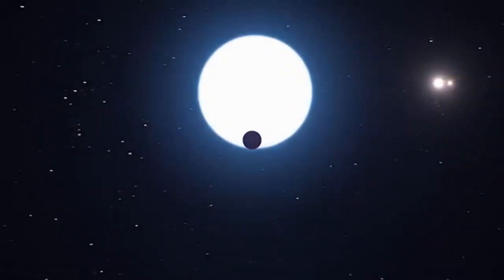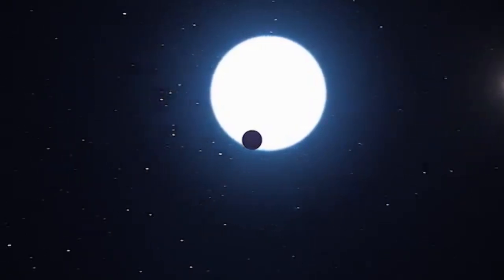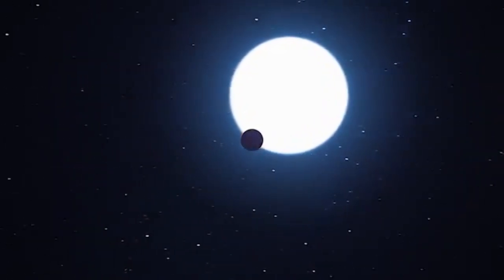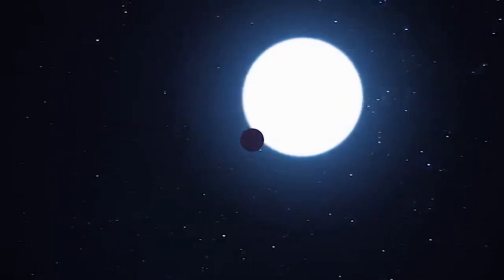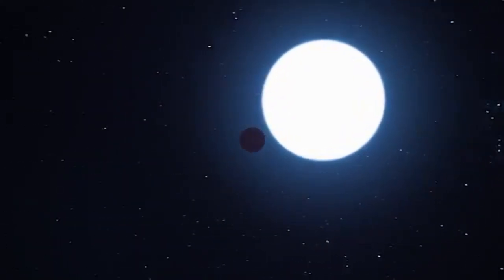For about one-fourth of its year, around 100 to 140 Earth years, there's continuous daylight. That's because as the big sun is rising, the two smaller ones are setting.